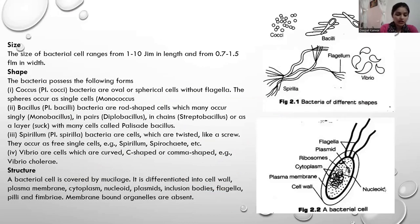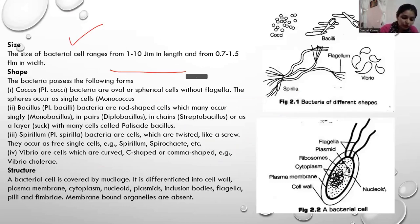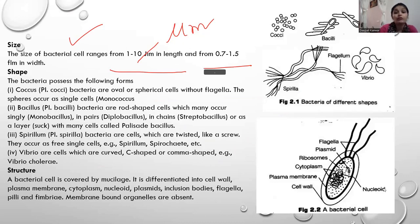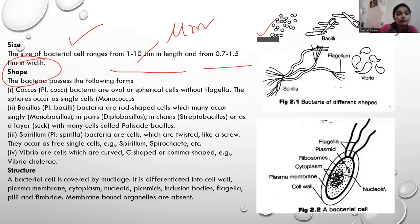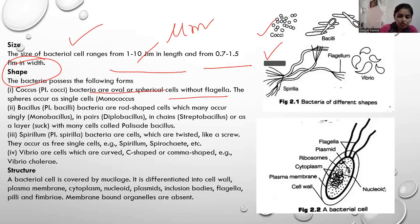This is Monera. If we talk about size, Monera is 1 to 10 micrometers in length and 0.7 to 1.5 micrometers in width. Now, shapes are very important. You can see here the first shape is coccus — bacteria that are oval or spherical shaped, with or without flagella, both can be present.